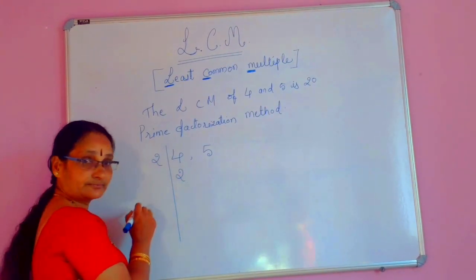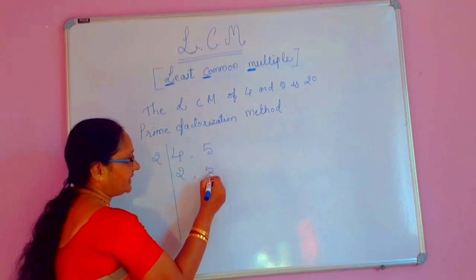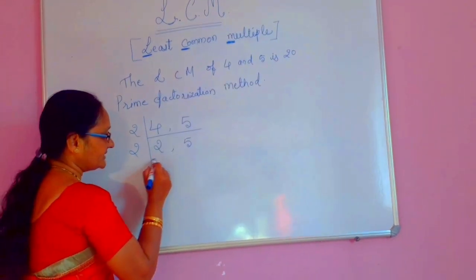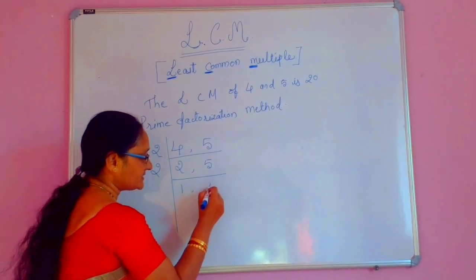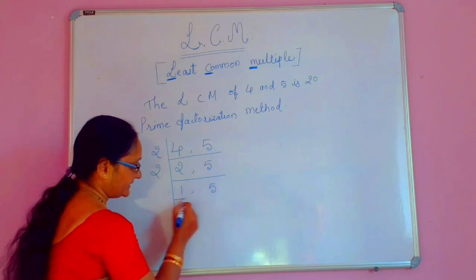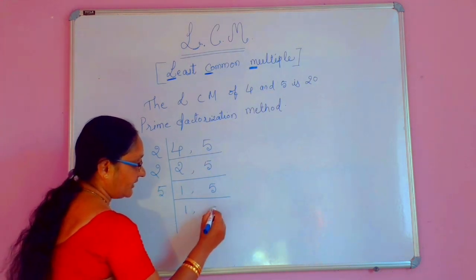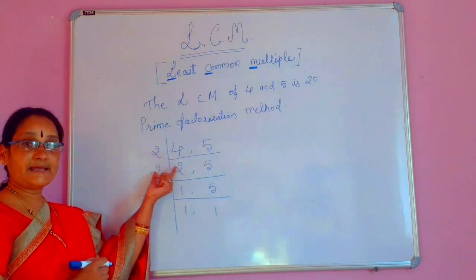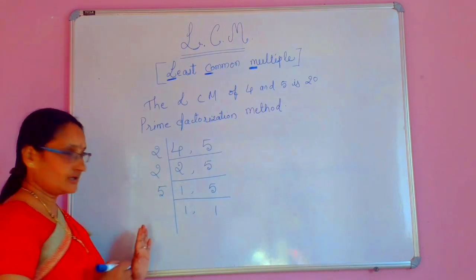2 twos are 4. Then 5 is not there in the two table — you write 5 as it is. Then 2 ones are 2. 5 is not there in the two table — you just write 5 as it is. Then next you take 5 here. Then 1 as it is — 5 ones are 5. This method is a prime factorization method. Here only we have to take the prime numbers.